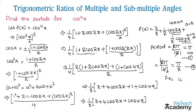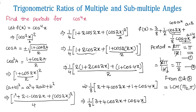From equations 1 and 2, the periods of cos 2x and cos 4x are π and π/2 respectively. The LCM of π and π/2 is π. Hence, π (which is 180°) is the period for the function cos⁴x.